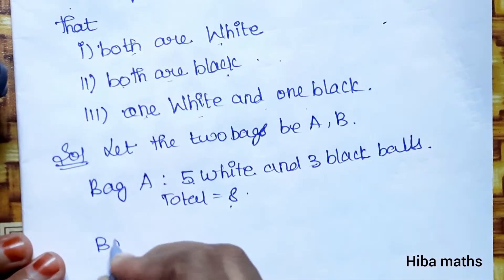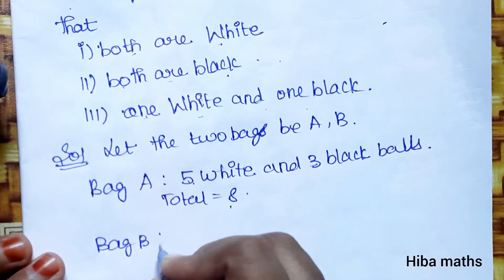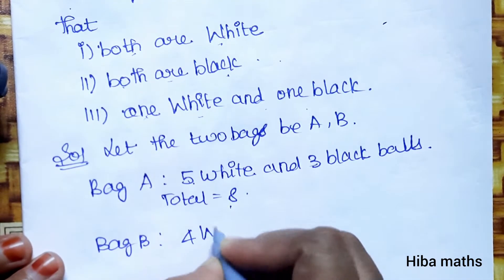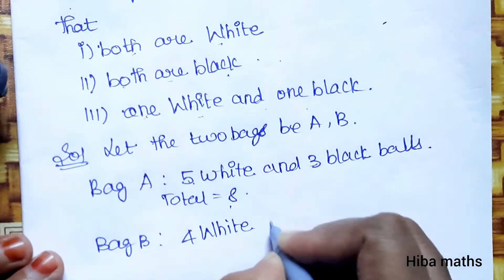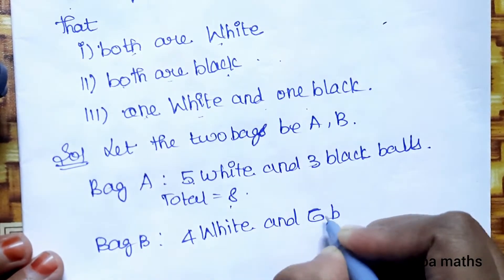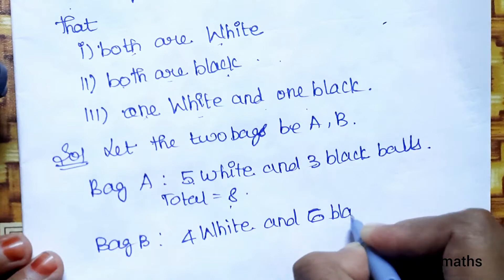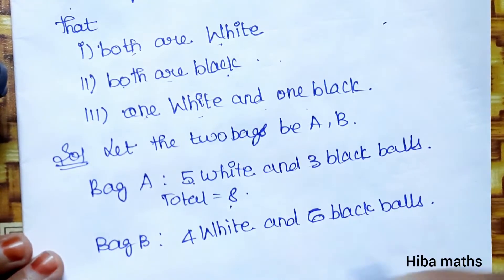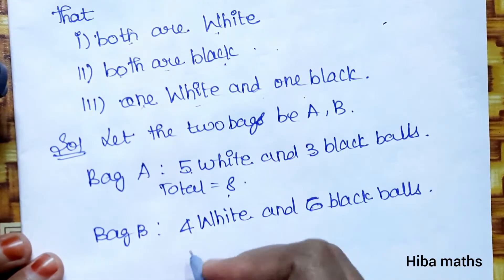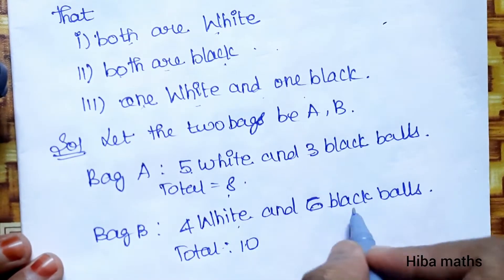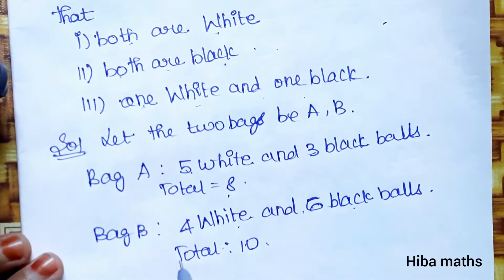Bag B contains 4 white and 6 black balls, so the total is 10. The probability of drawing a white ball from Bag B is 4/10, and the probability of drawing a black ball is 6/10.